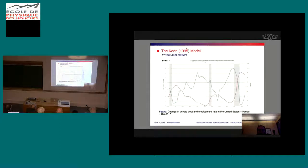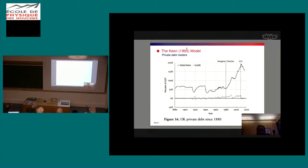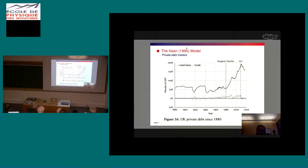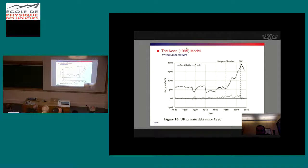Once you understand this, you see that for any macroeconomic analysis you need to take into account private debt. Looking at the UK between 1880 and today, you can see a striking empirical fact: between the end of the 19th century and 1980 — essentially up to Thatcher — the private debt to GDP ratio remained approximately constant around 55 to 60 percent, ignoring the two world wars. Since 1980, it has been increasing dramatically.